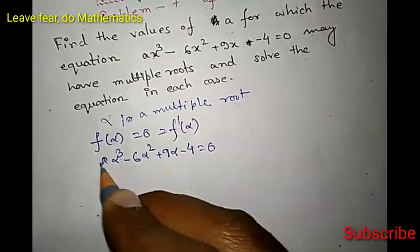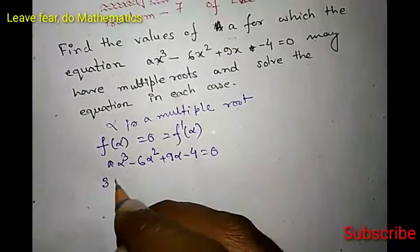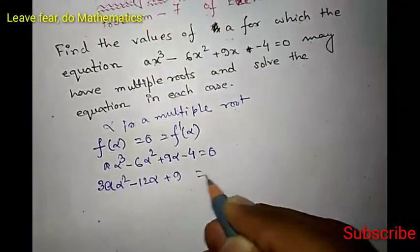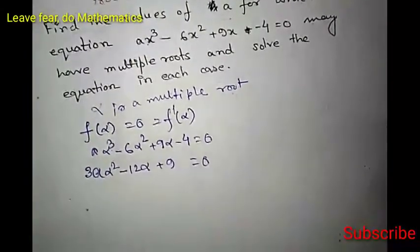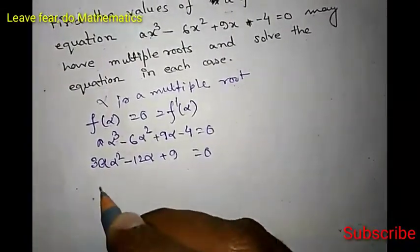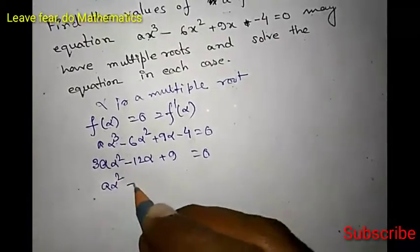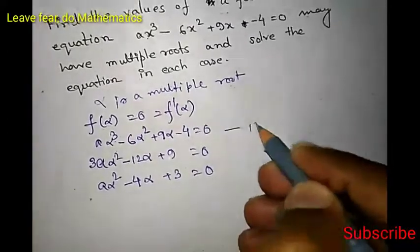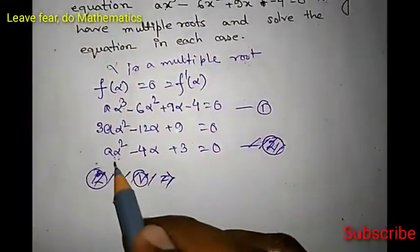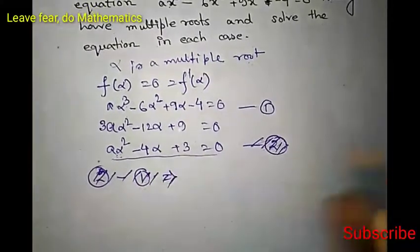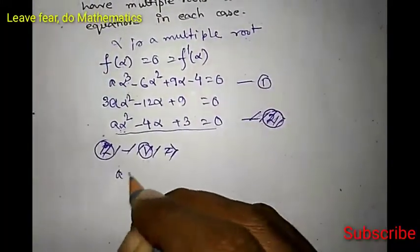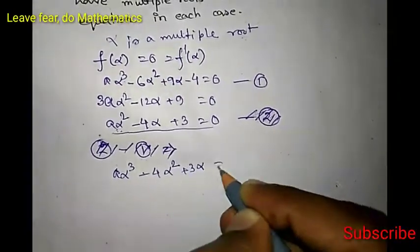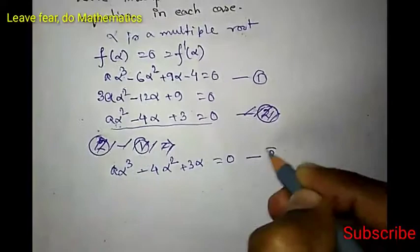Then f'(alpha) — just the derivative of this. So f'(alpha) is 3A alpha squared minus 12 alpha plus 9 equals 0. Now cancel 3, then we will have A alpha squared minus 4 alpha plus 3 equals 0. This is our equation 1. Now let us multiply this equation by alpha on both sides. Then we will have A alpha cubed minus 4 alpha squared plus 3 alpha equals 0. This is our equation 2.